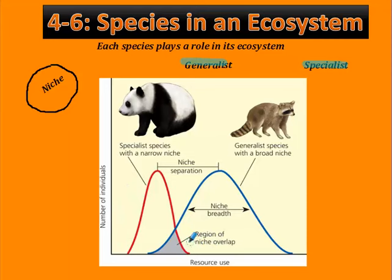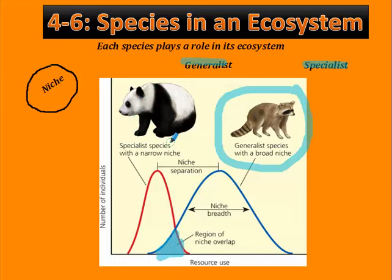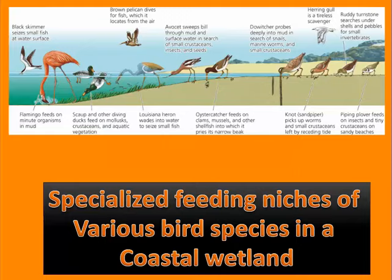There's a region of niche overlap here. If there are too many generalist species competing for just this section of resource use, then the specialists are really going to wind up being in trouble. This diagram on top of page 96 shows the specialized feeding niches of various bird species in a coastal wetland. The different specialization scenarios for each one actually reduce competition for resources, because every single species is so specialized in the food it needs and the conditions in which it survives. So this coastal wetland winds up being a pretty successful ecosystem.